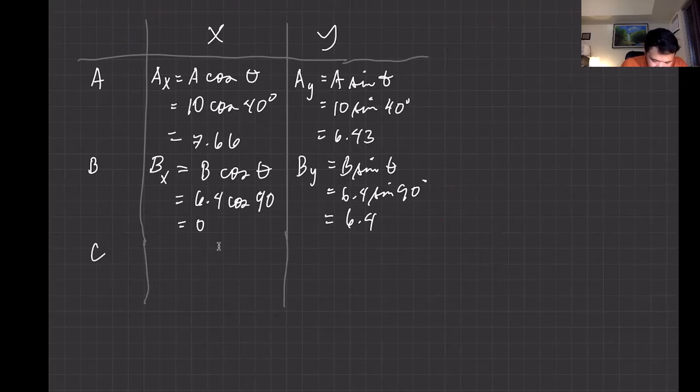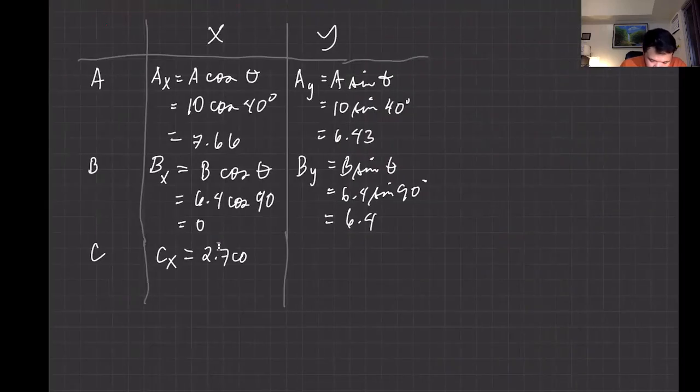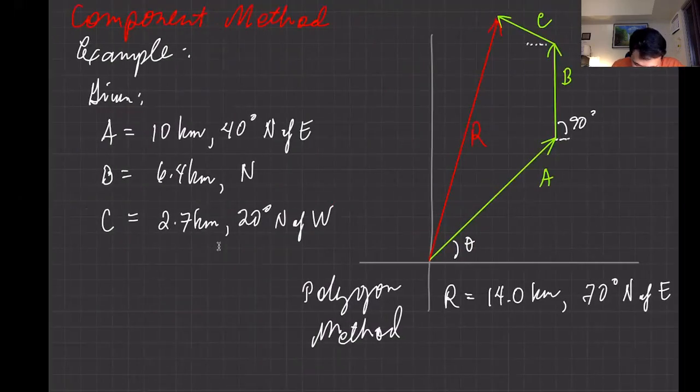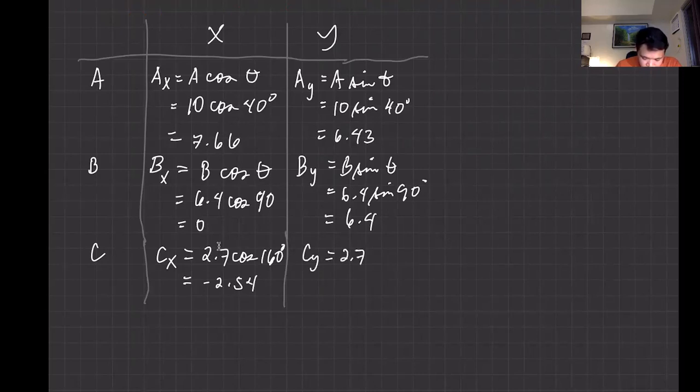Now for vector C, Cx is equal to 2.7 cosine—this is critical—because this is the 20 degrees. But as we've said, we have to use the angle that is with respect to the positive x-axis. So this is the angle that we're going to use, and that is about 180 minus 20, so 160 degrees. So that's the angle we're going to use: 160 degrees. Use your calculator, you should get an answer of negative 2.54. And then for Cy, similar: 2.7 sine of 160 degrees. Then use your calculator, you should get an answer 0.92.